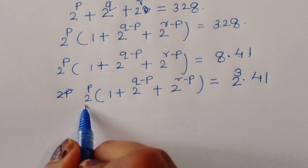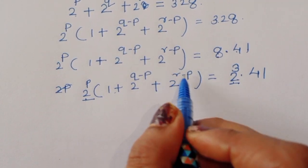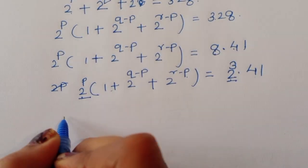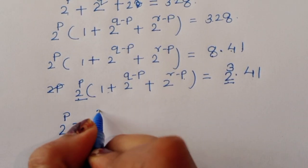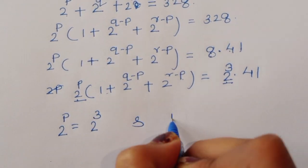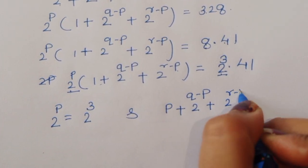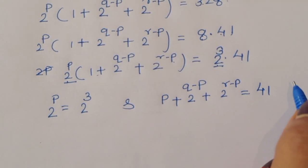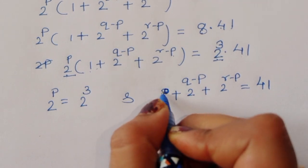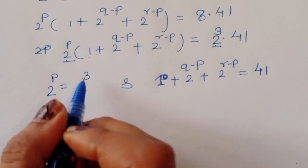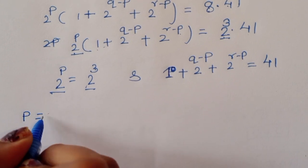Comparing both sides: 2^P corresponds to 2^3, so by comparing base and power we get P = 3. And (1 + 2^(Q−P) + 2^(R−P)) = 41.